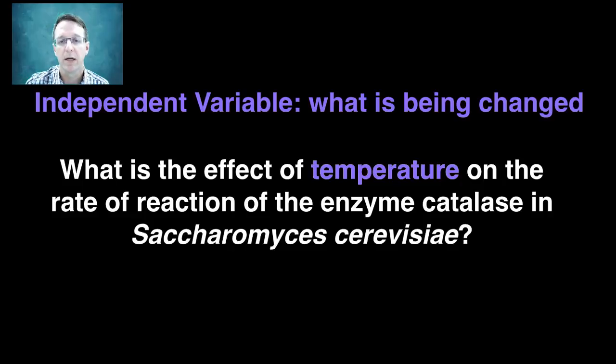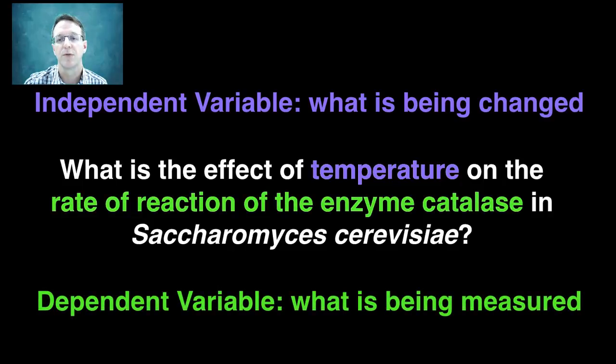Meanwhile, Y, or in this case, the rate of reaction of catalase, is the dependent variable, which is the variable that the experimenter will measure or collect, and that will become the raw data of the experiment.